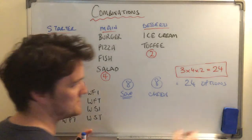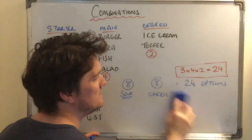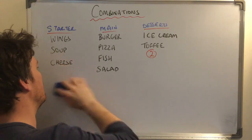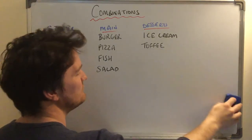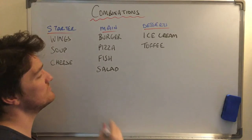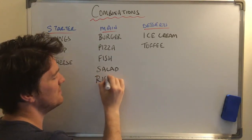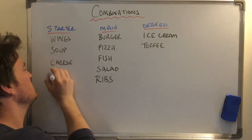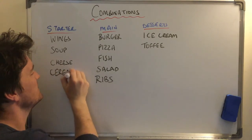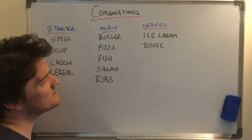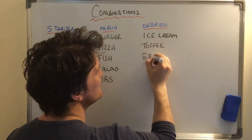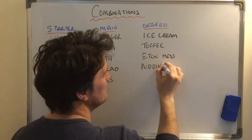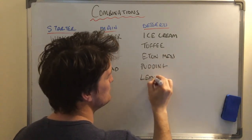Let's expand the restaurant and make it a little harder. We're going to add ribs as another main. For starters, we'll add cereal — because why not, it's a bistro. And for desserts, we now also have Eton mess, pudding, and lemon drizzle.